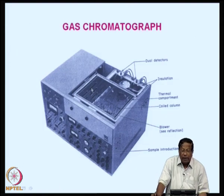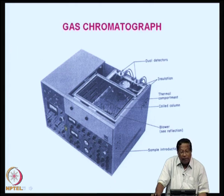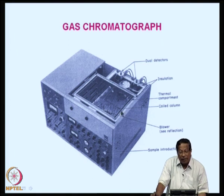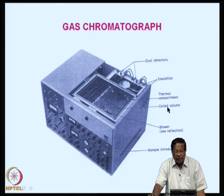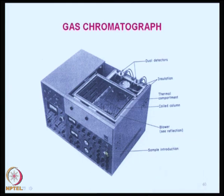A typical gas chromatograph looks like a big box with several controls. Inside are thermostated compartments where you can see the columns. The detectors are placed outside the column as components emerge out of the system. Insulation, thermal compartments, columns, a blower, and a sample introduction system are all present. The sample is injected through a septum using a syringe.